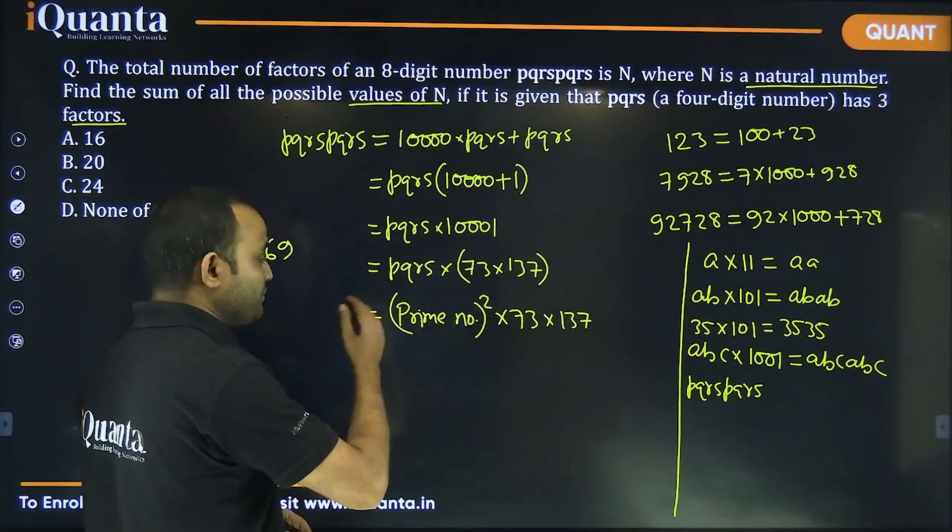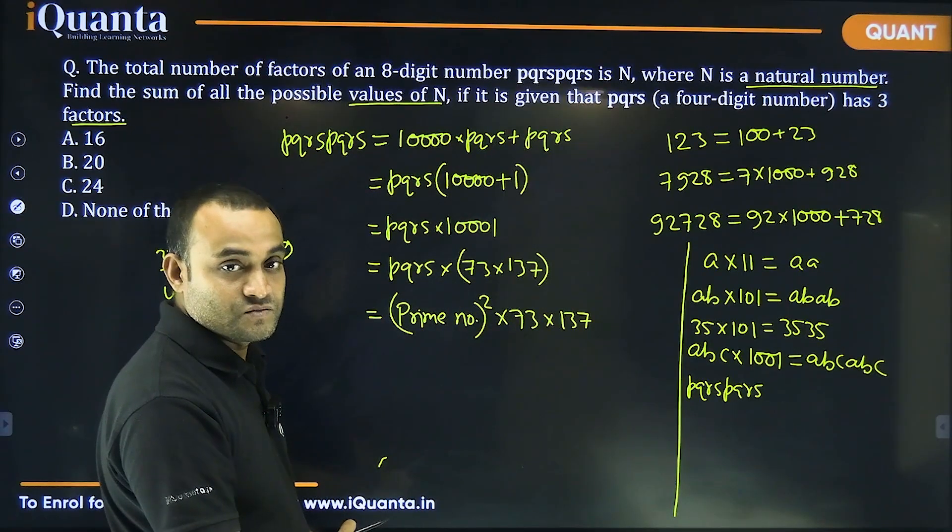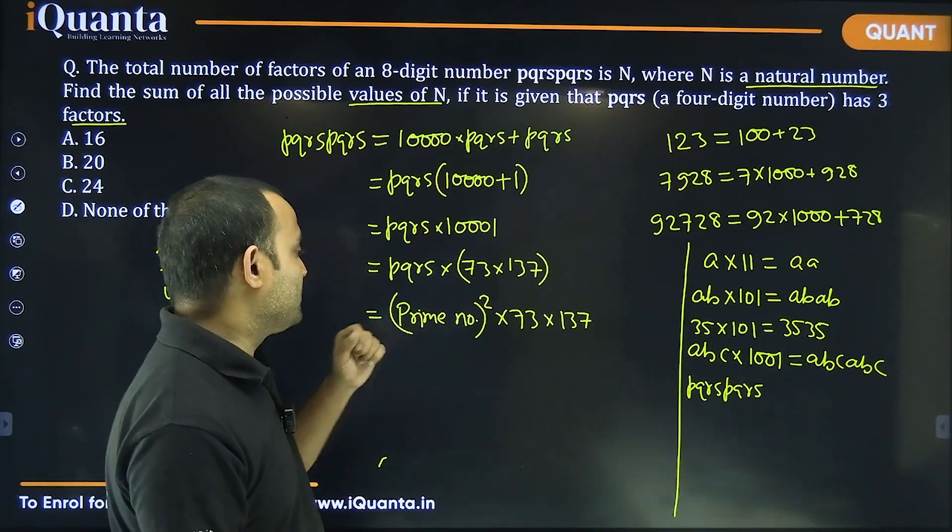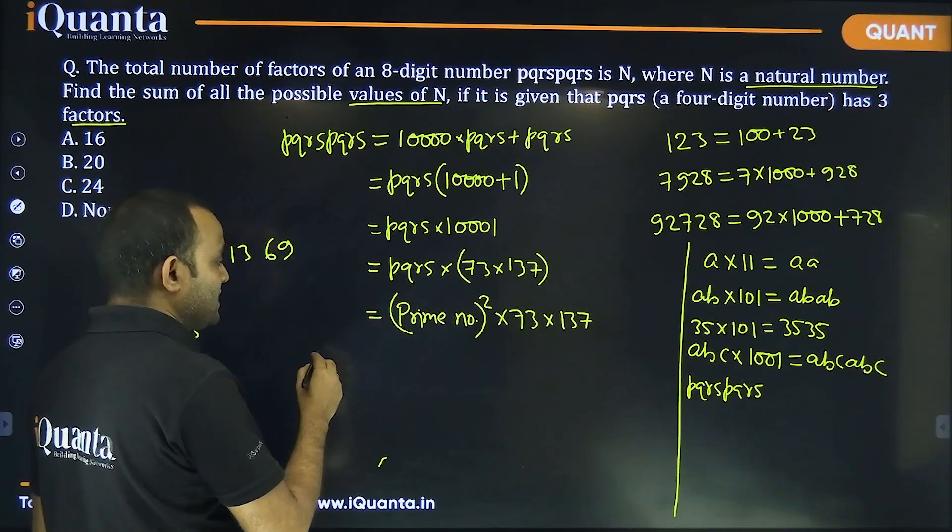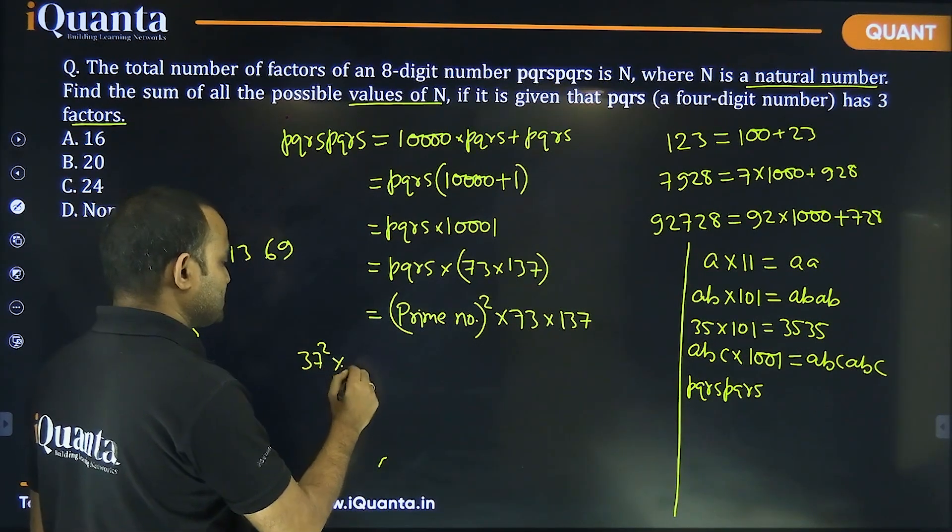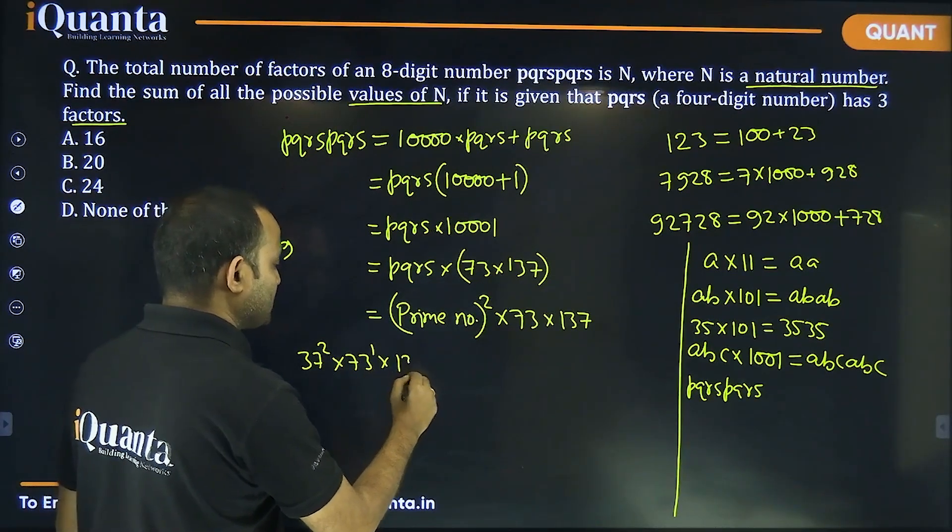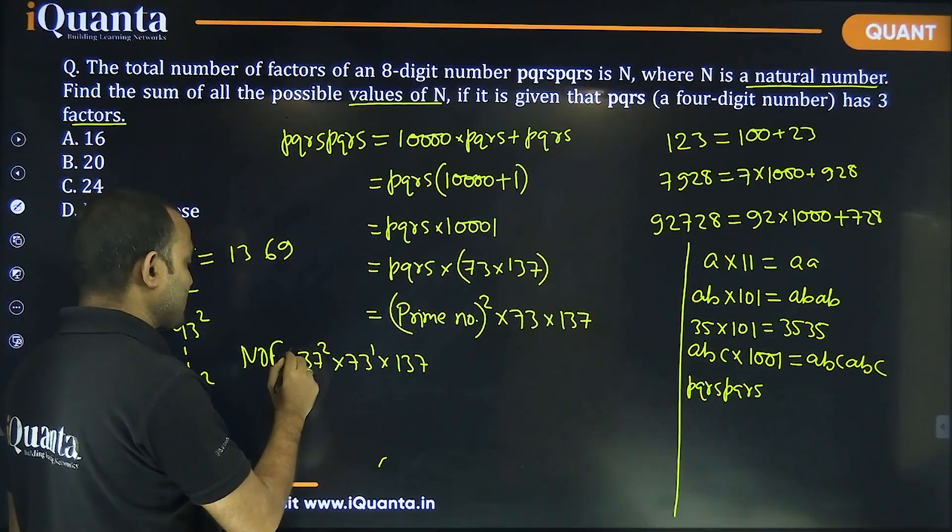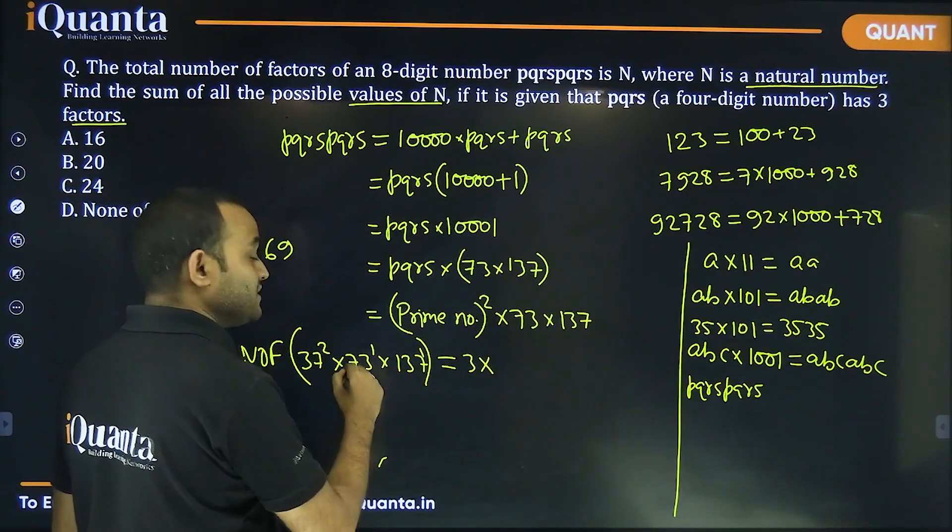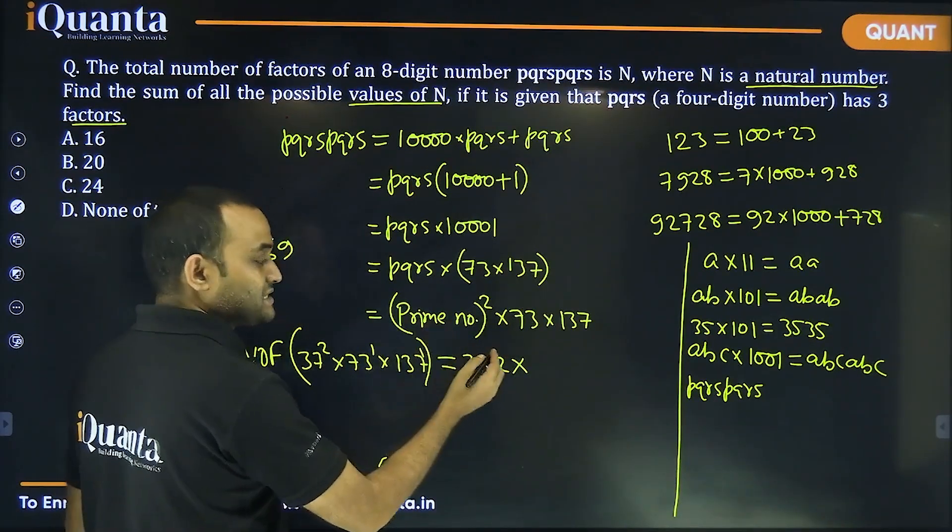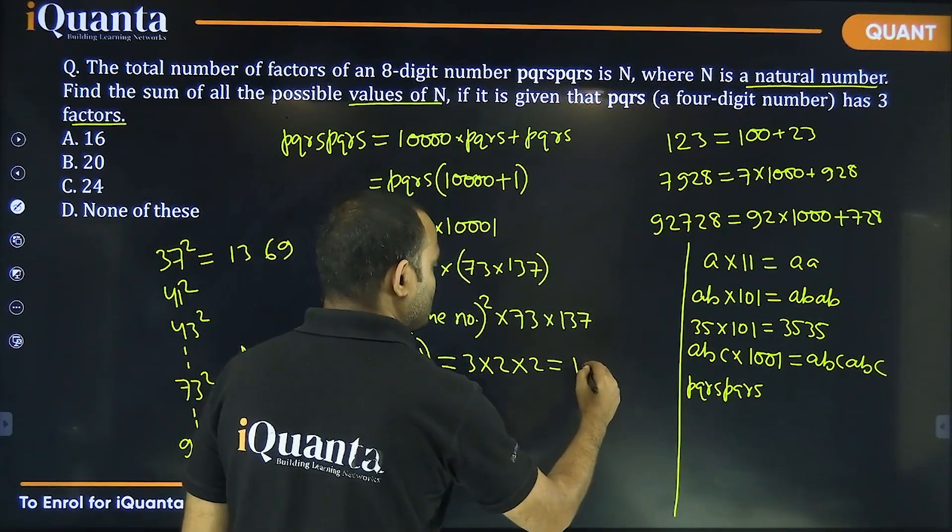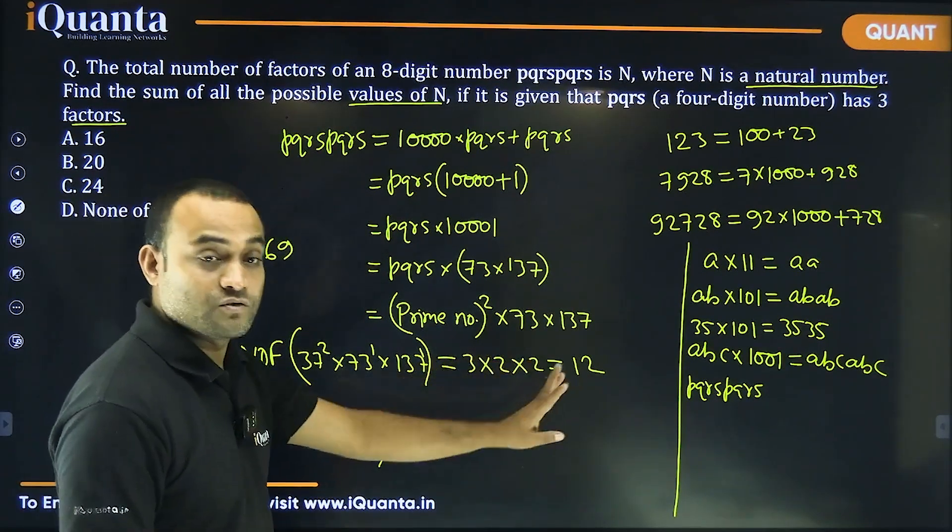So, what will be the number of factors of this number? There will be two different kinds of scenarios. One of the case will be when we have this prime number as any number except 73. Let us say 37 square. So, 37 squared into 73 to the power 1 into 137. What will be number of factors of this number? So, 37 square will have three factors. 73 to the power 1 will have two factors. And 137 to the power 1 will have two factors as well because 137 is also prime number. So, a total of 12 factors. This is one of the possible value of n.